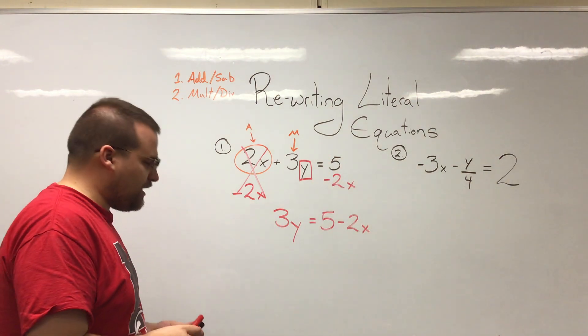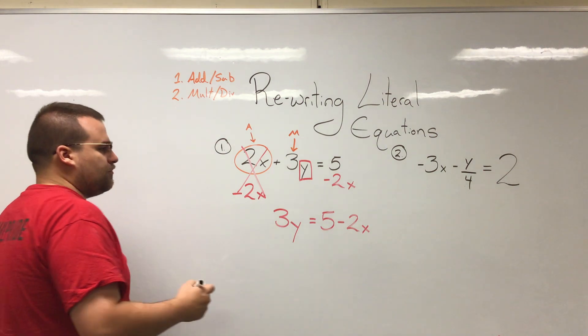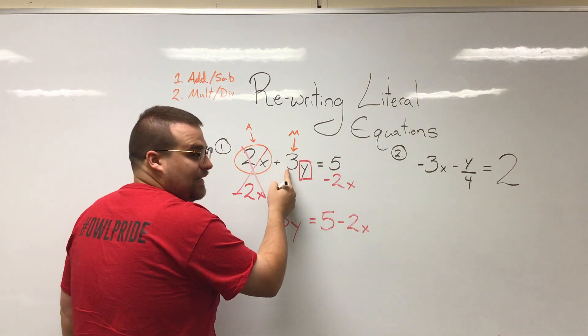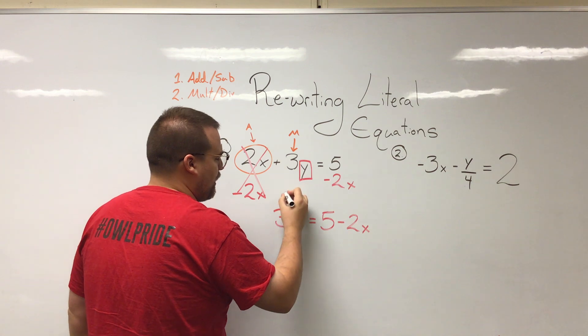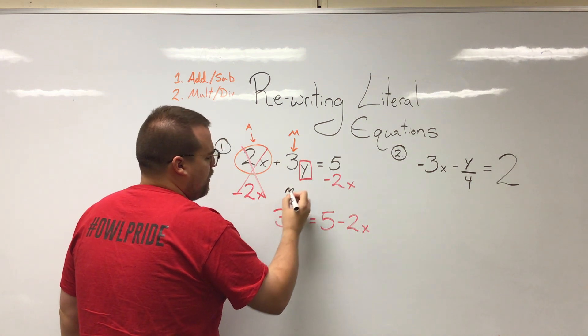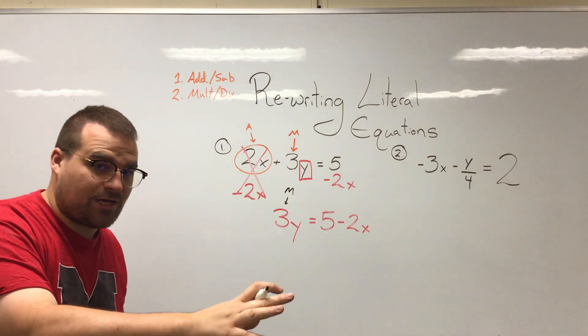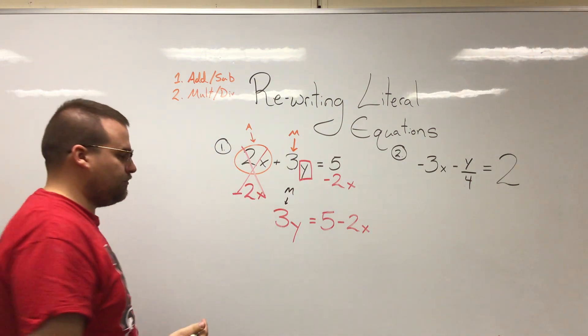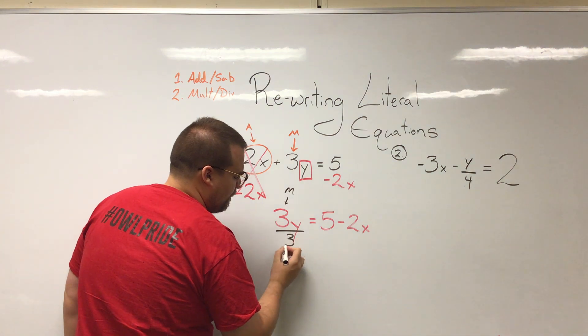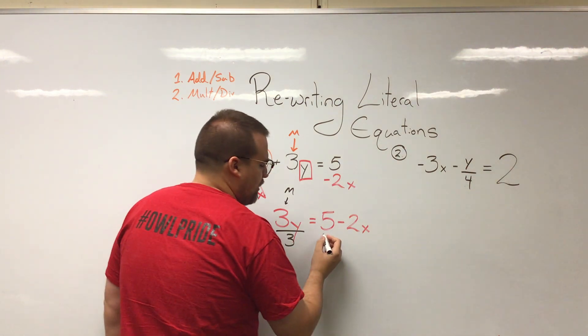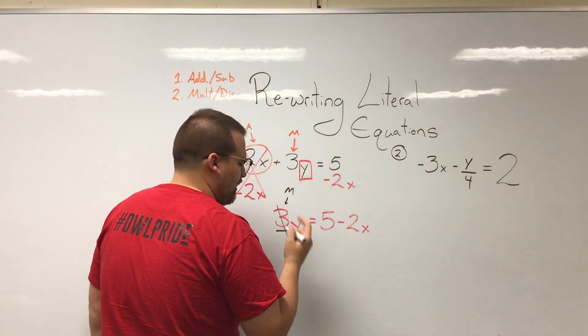We still want to work to get towards getting y on its own. We have 3y left and we recognized before that 3 is multiplying. So how do we get rid of multiplication? What's its inverse operation to move it to the other side? Division. So I'm going to go ahead and divide both sides by 3.